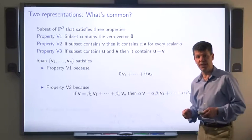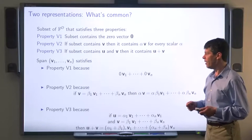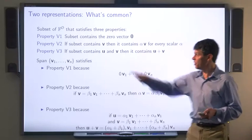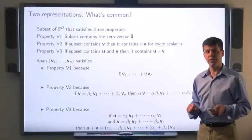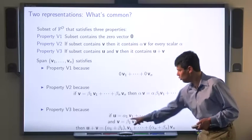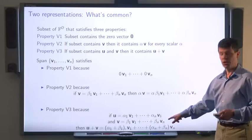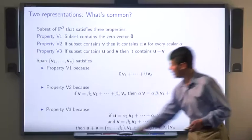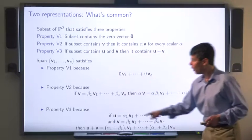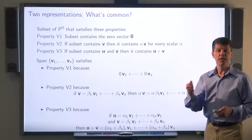For property V3: if two vectors u and v are in the span, their sum is also in the span. Since u and v can each be written as linear combinations of v1 through vn, we can represent their sum by taking a linear combination where each coefficient is the sum of the corresponding coefficients in u and v.